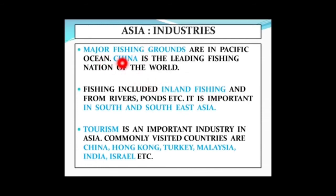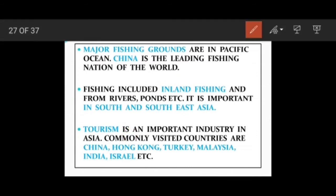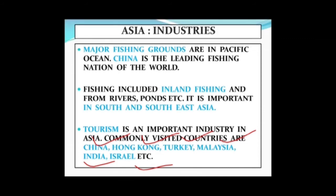Apart from fishing and other industries, the tourism industry is also very flourishing in countries like China, Hong Kong, Turkey, Malaysia, India and Israel. These are developed tourist nations with famous tourist destinations attracting visitors from all over the world.